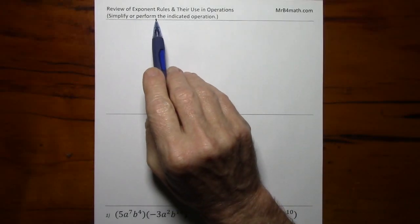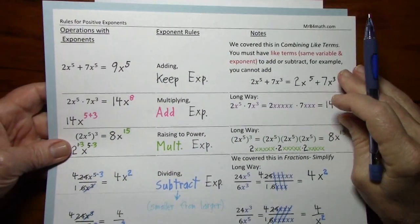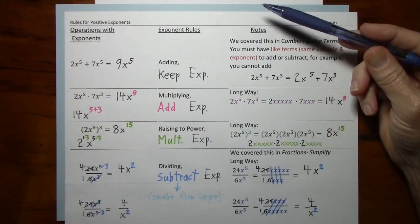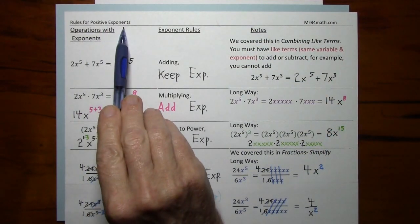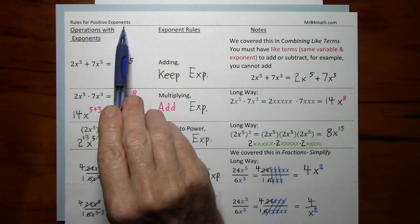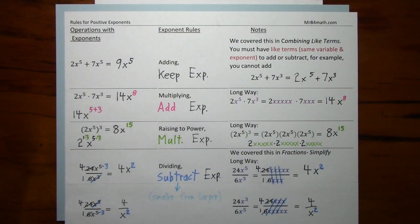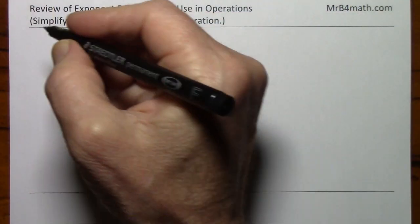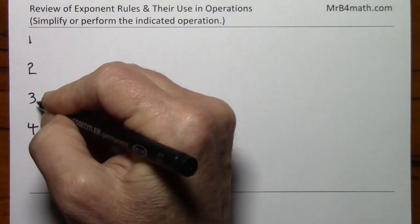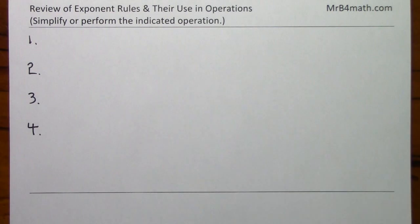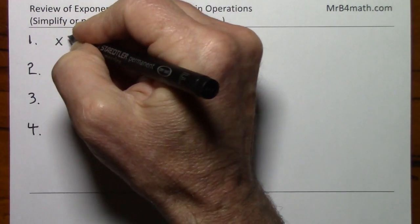In this review of exponent rules and their use in operations, I'll present a simplified version of this detailed explanation of the rules for positive exponents. The reason I'll simplify is so it's easier to memorize. So again, we'll have four rules. And since there are four rules, in order to make this easy to memorize, I'll use x to the fourth.